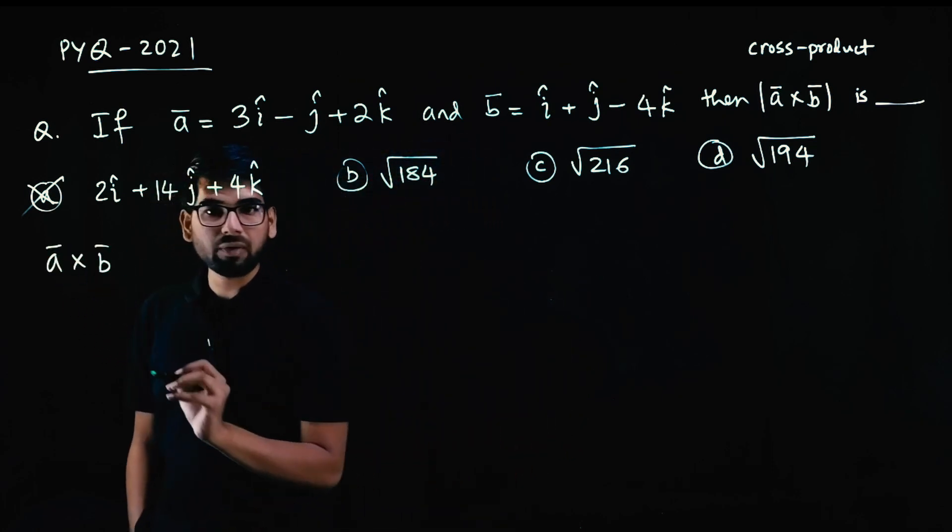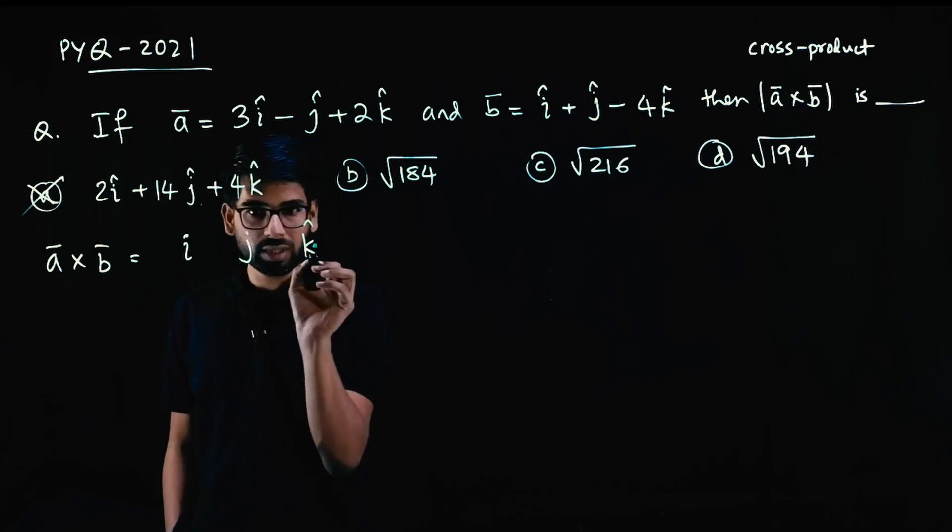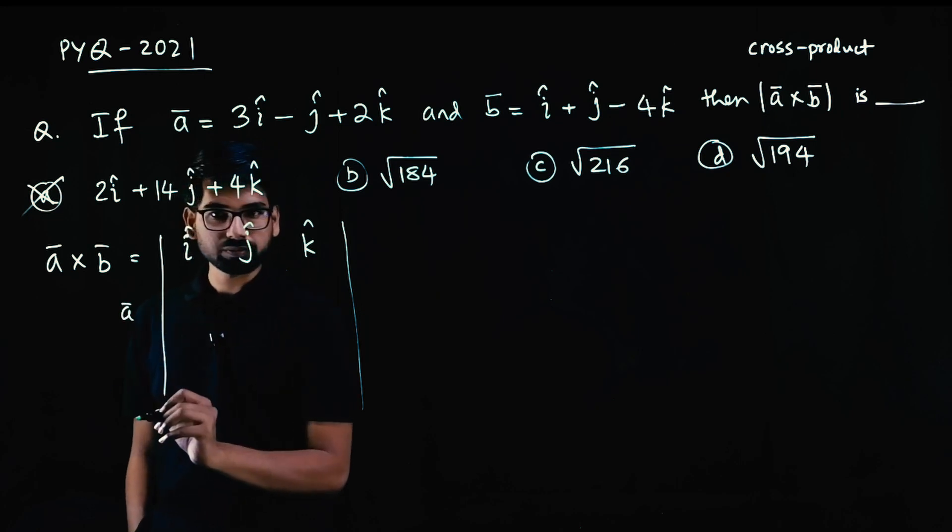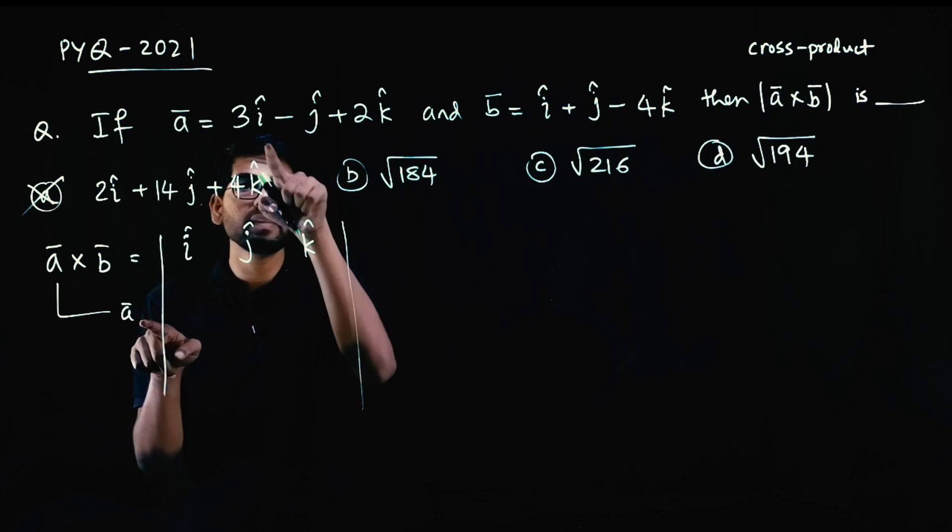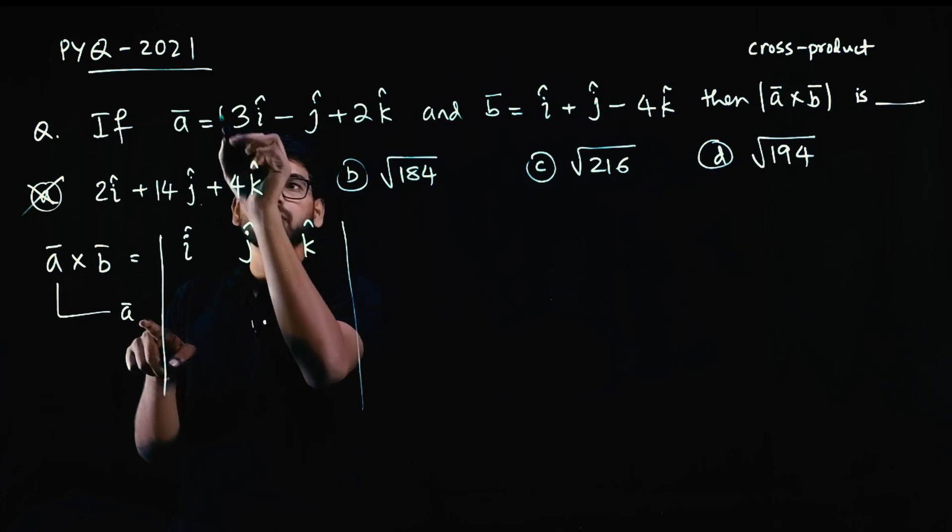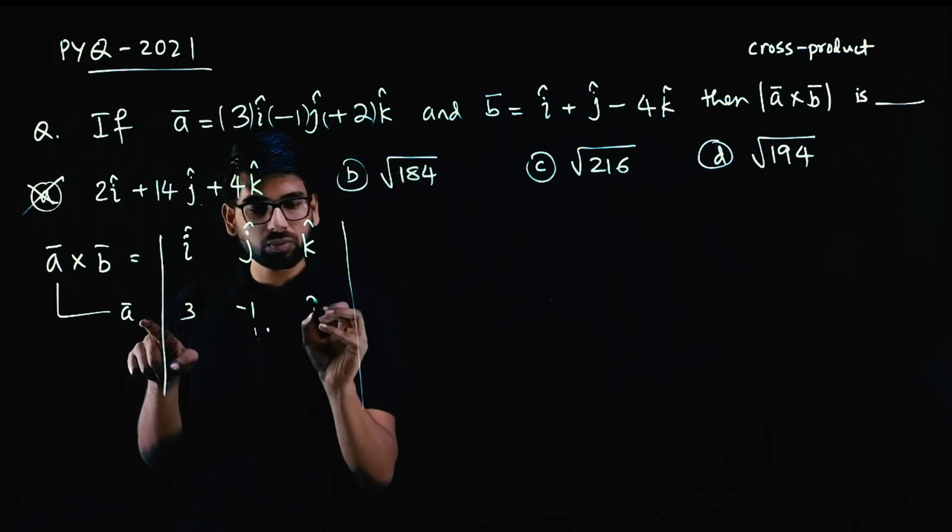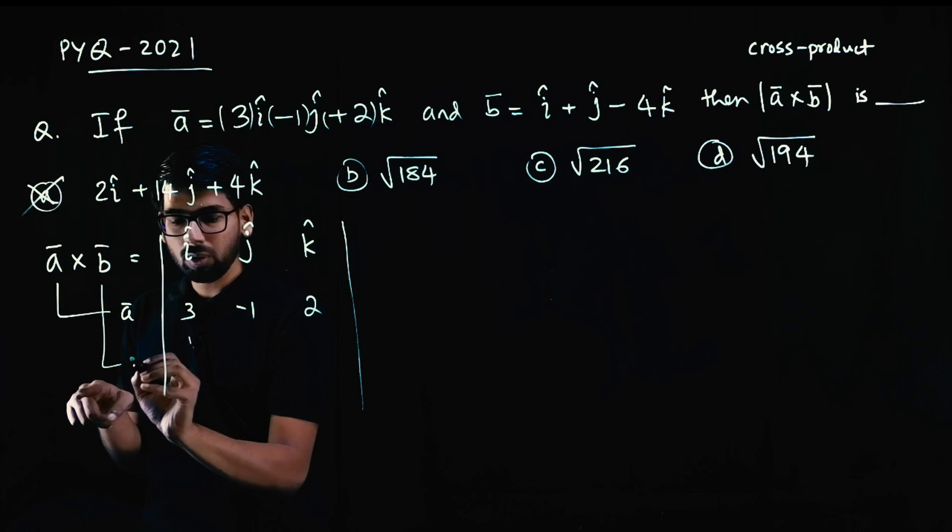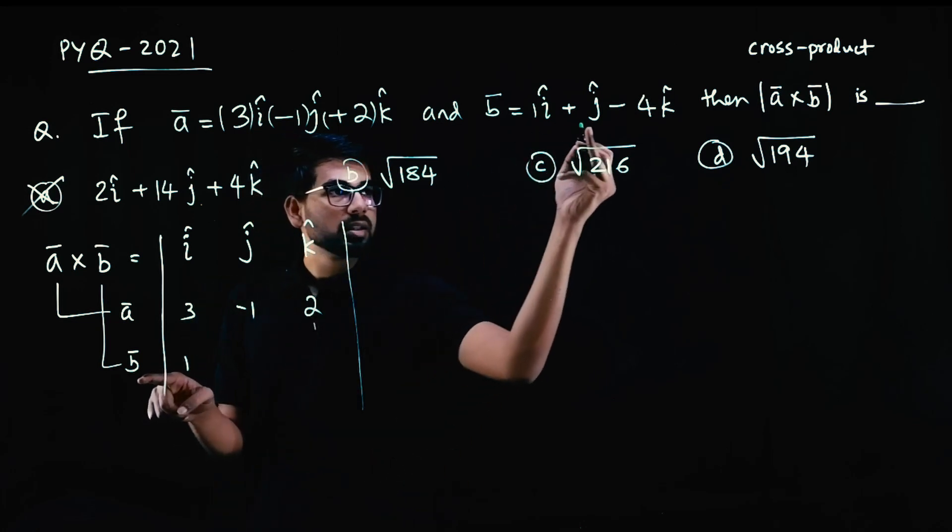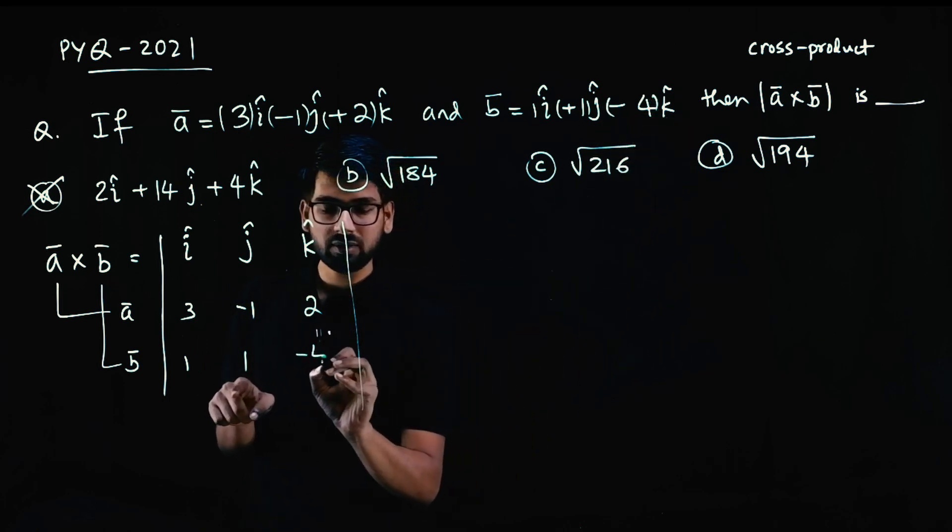A bar cross B bar, cross product is the determinant of this matrix. First row is i, j, k. Second row is A vector coefficients. A vector i coefficient is plus 3, j coefficient is minus 1, k coefficient is plus 2. Third row is B vector coefficients. B vector i coefficient is plus 1, j coefficient is plus 1, k coefficient is minus 4.